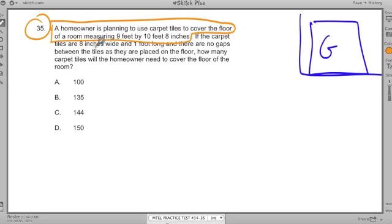If the carpet tiles are eight inches wide and one foot long and there are no gaps between the tiles as they are placed on the floor, how many carpet tiles will the homeowner need to cover the floor of the room?